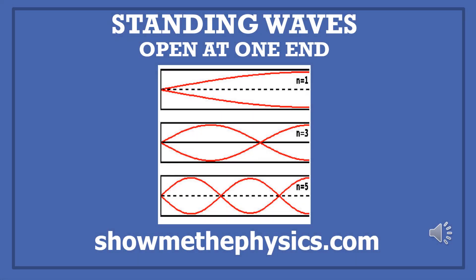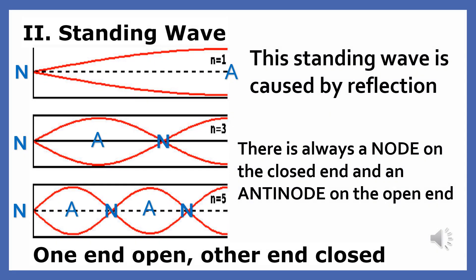This presentation covers standing waves that are open at one end. This kind of standing wave is created by wind instruments. Just like all standing waves, this wave is produced when two waves of the same frequency and amplitude travel in opposite directions in a medium. While standing waves closed at both ends can be created by one or two wave sources, this wave is created by a single source — when a single wave source overlaps the reflection from a fixed boundary or closed end.